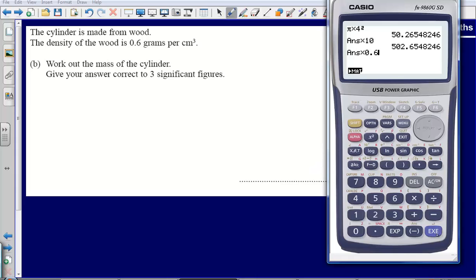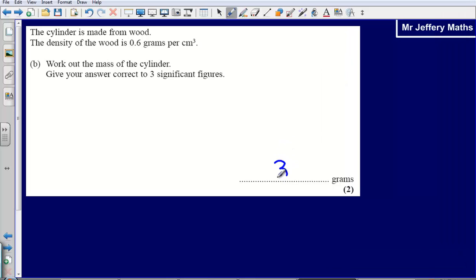When we multiply that by 0.6, that gives us an answer of 301.592. Again we were asked to round it to three significant figures, so it's going to be 301 point 5, so we're going to round up to 302 grams.